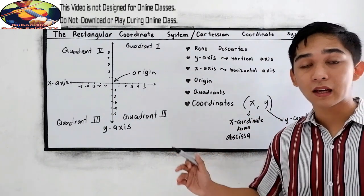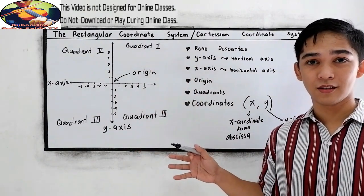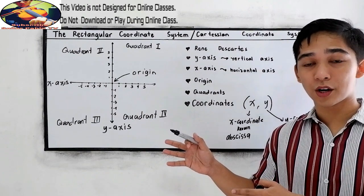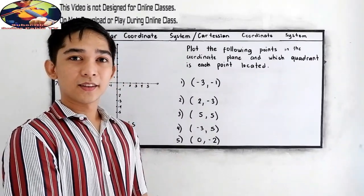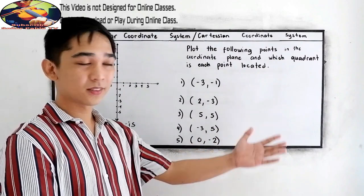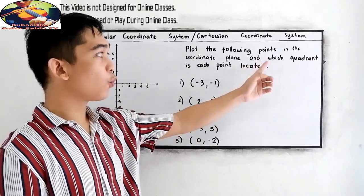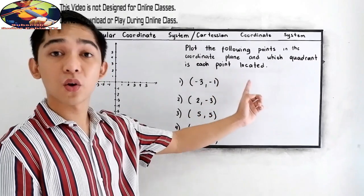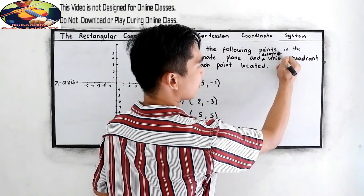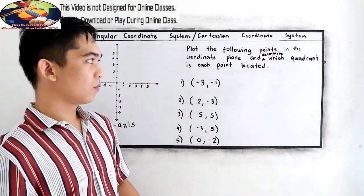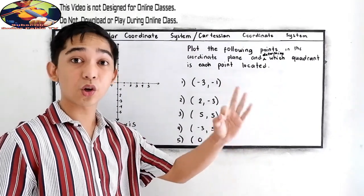After discussing the different mathematical terms, our next lesson is how we are going to use the Cartesian plane. Now let's try this example: plot the following points in the coordinate plane and determine which quadrant each point is located in — whether it is quadrant one, quadrant two, quadrant three, or quadrant four.